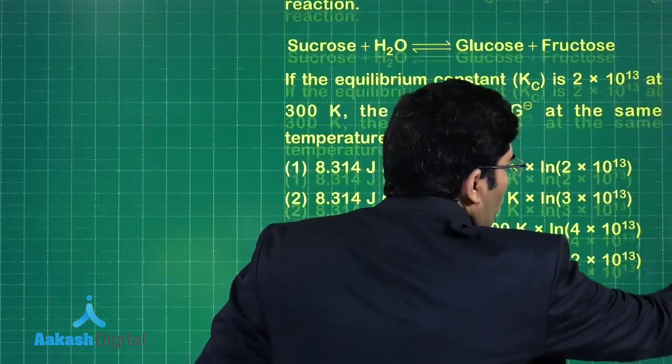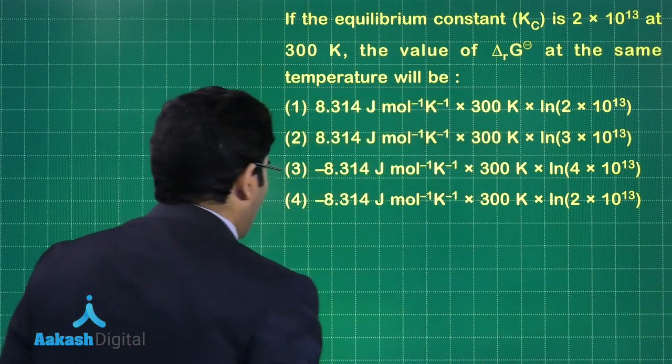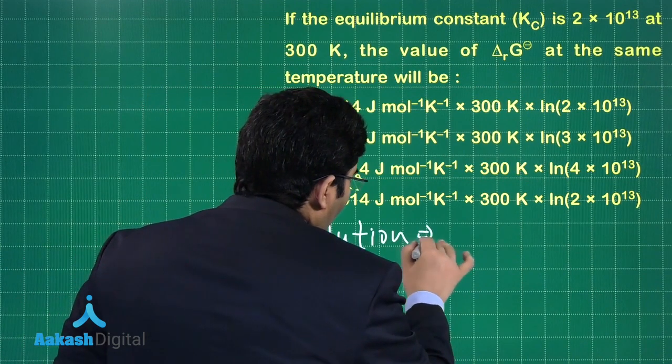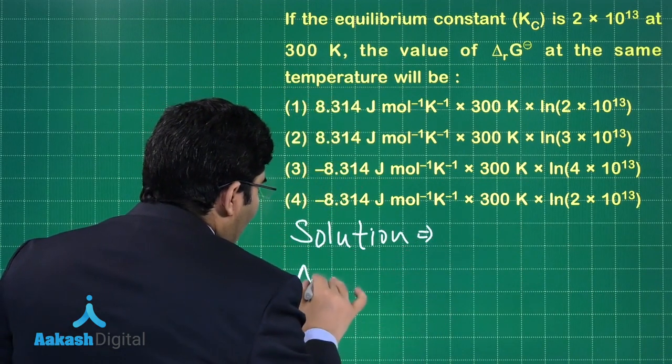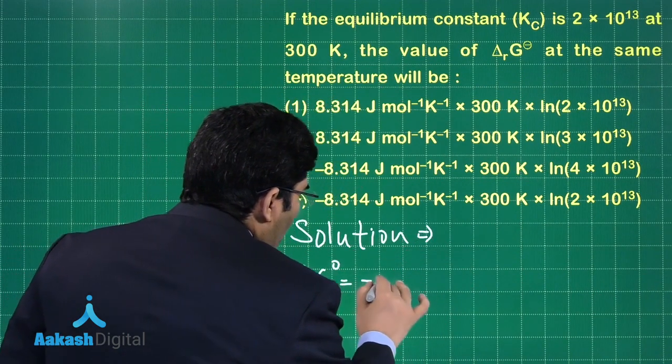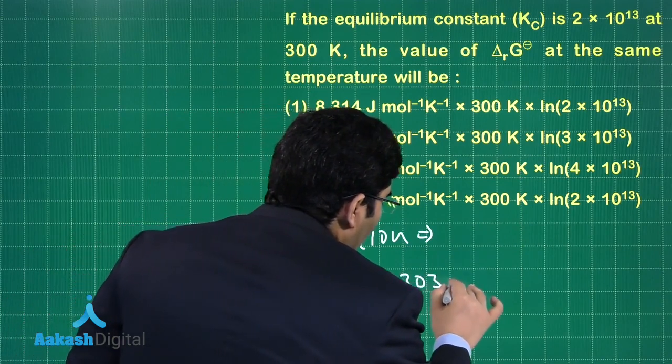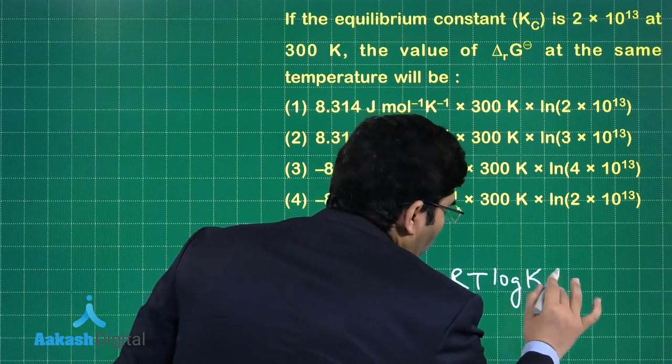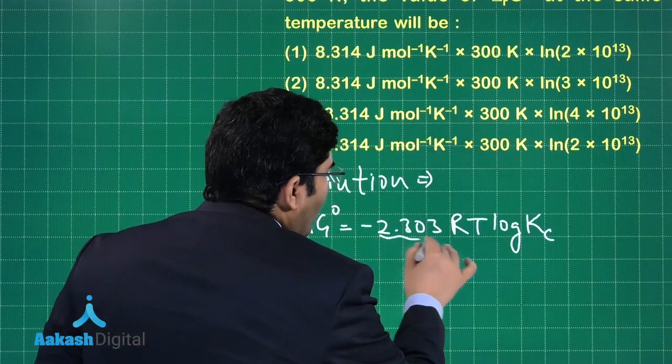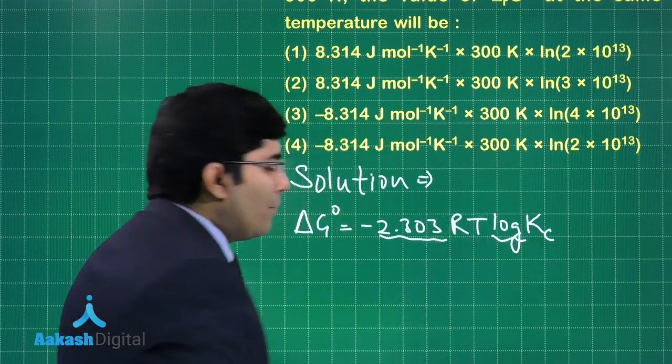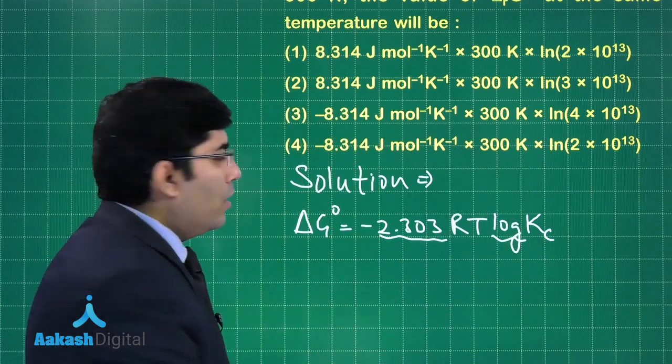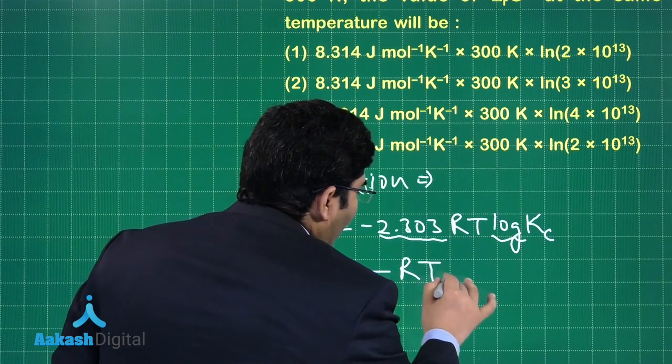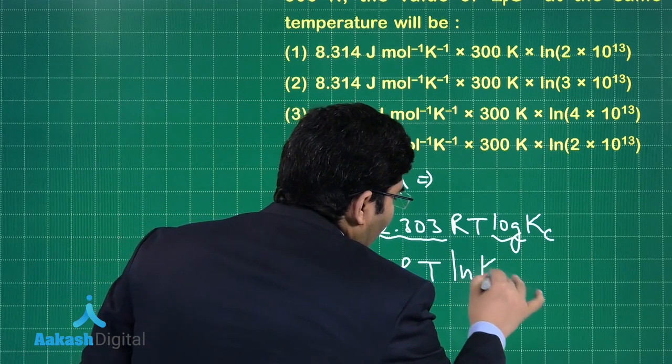It's a simple question from equilibrium. The solution: delta G naught is equal to minus 2.303 RT log Kc. Now this 2.303 and log will become natural log, so we can write it like minus RT ln Kc.